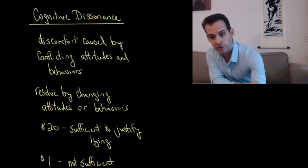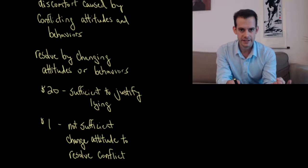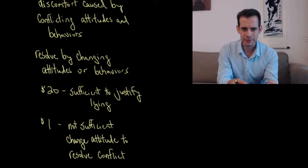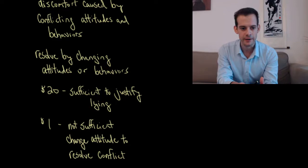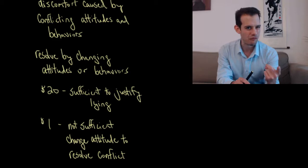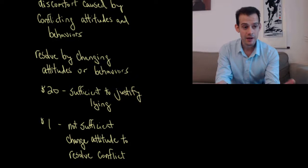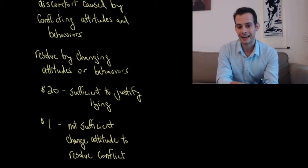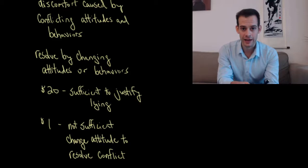For the $1 group, the reasoning goes: the task was boring, I told someone it was fun, and I only got a dollar — was my honesty worth so little? A dollar isn't sufficient to resolve this conflict. So what was happening is that participants were changing their attitude about the task itself to reduce the dissonance — saying, well, maybe it wasn't so bad, it was kind of meditative, it was relaxing, it was engaging. I think I actually enjoyed the task. I didn't really lie, and I got a dollar.